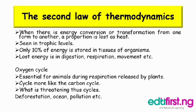Oxygen cycle: oxygen is essential for animals during respiration and is released by plants. The cycle works much like the carbon cycle. What is threatening the cycle? Deforestation, ocean pollution, etc.